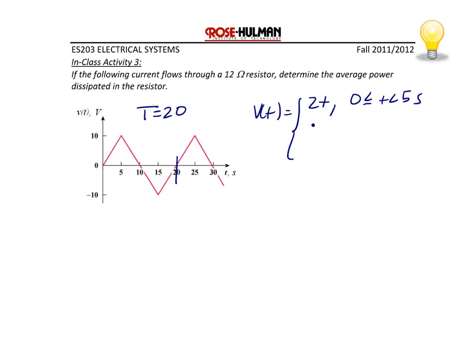The equation of this second line is negative 2t plus 20, and that would be for t between 5 and 15 seconds. And then this third line has an equation of 2t minus 40, and that would be for t between 15 and 20 seconds. And then the waveform would repeat.